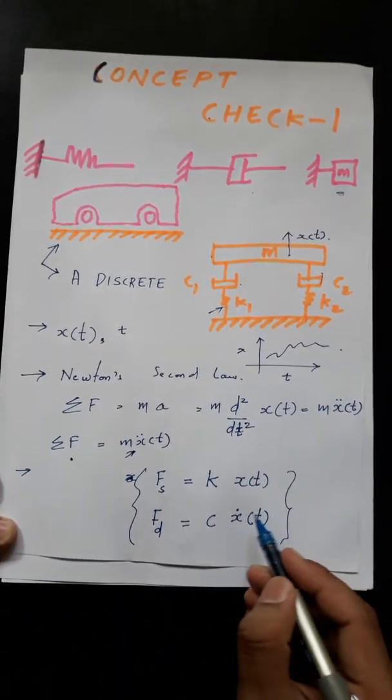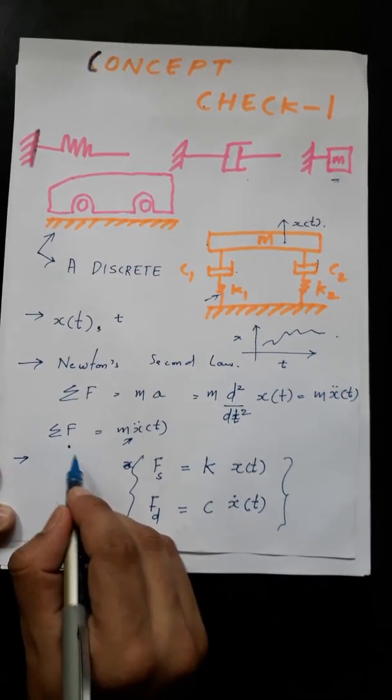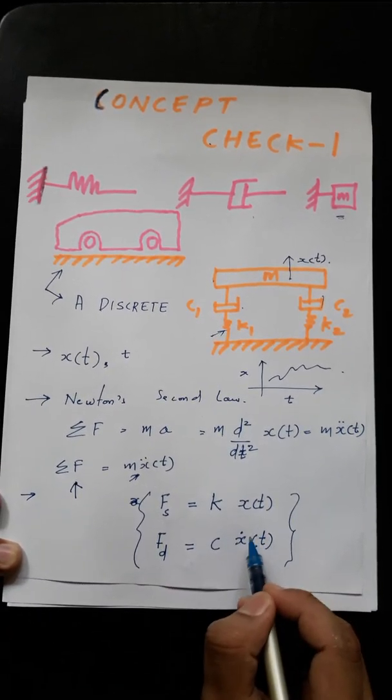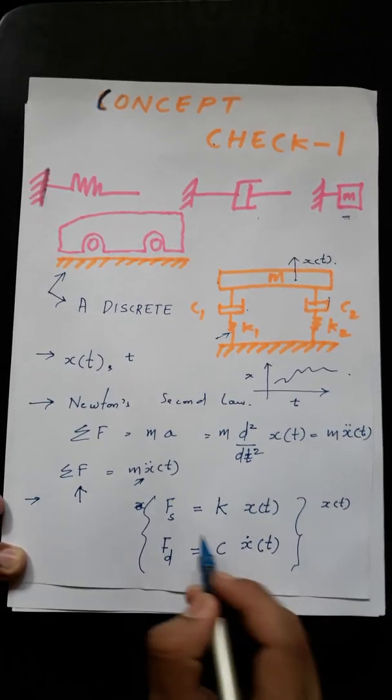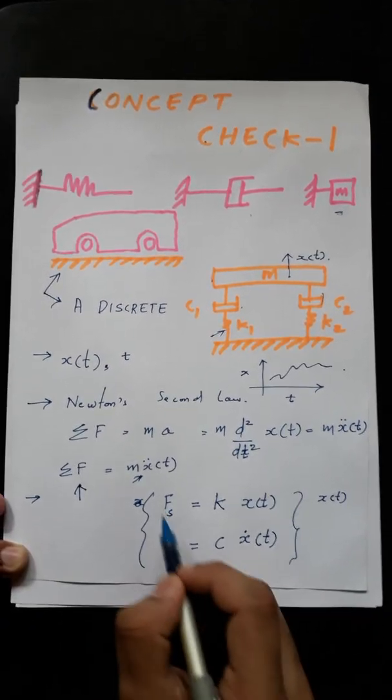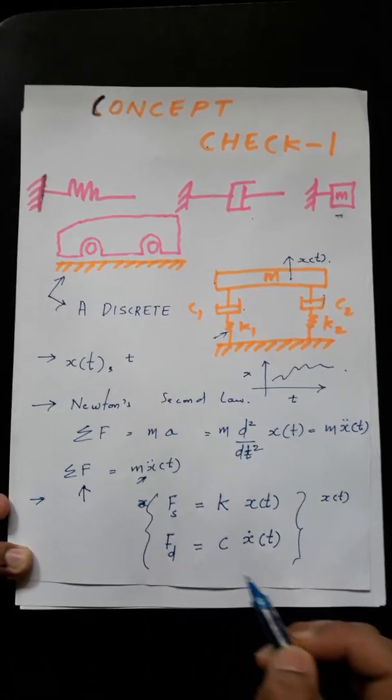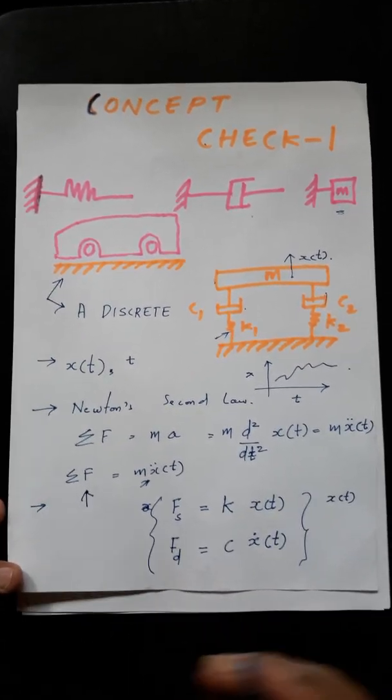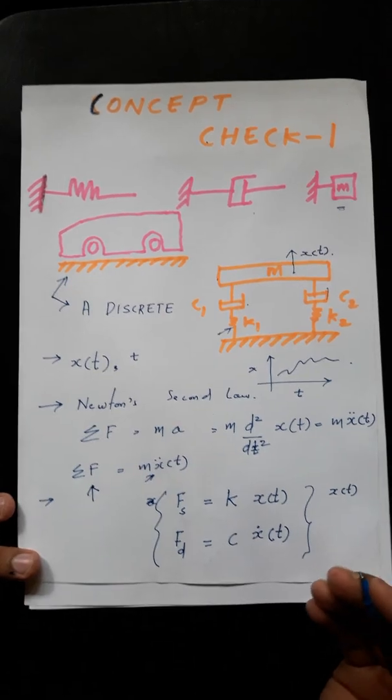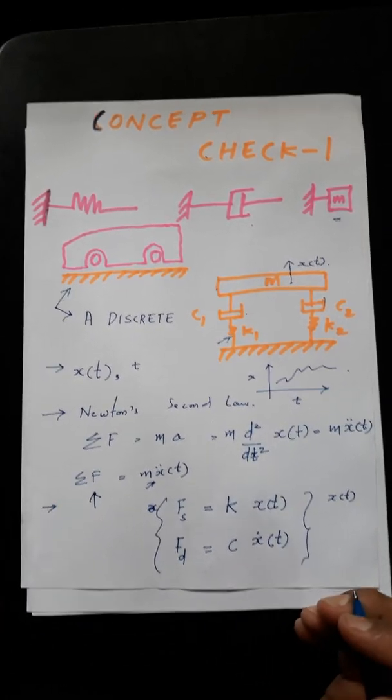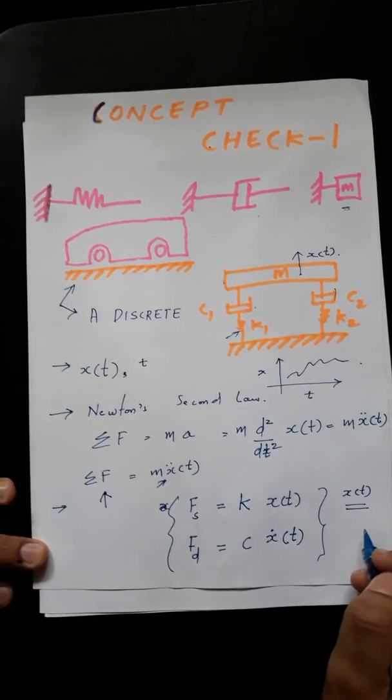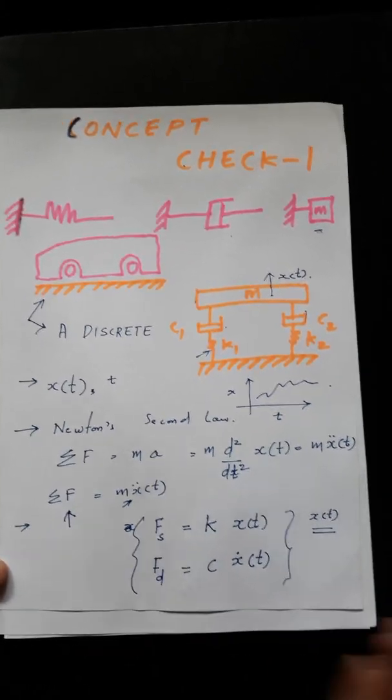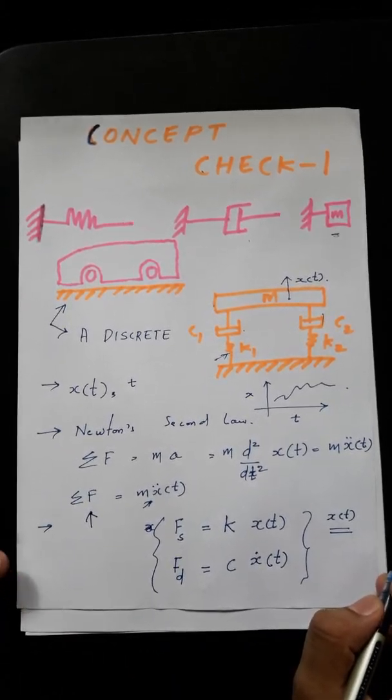So let's say what a spring does is the force acting on the spring is the spring constant times the response or the displacement. Whereas the force in the damper is the damping coefficient times the first derivative of the response.